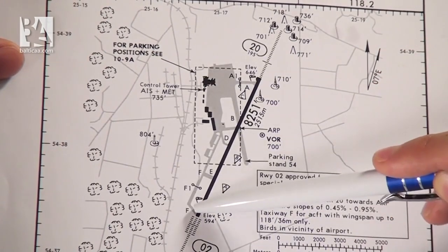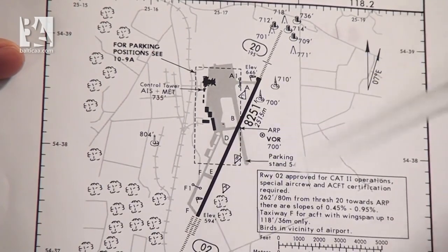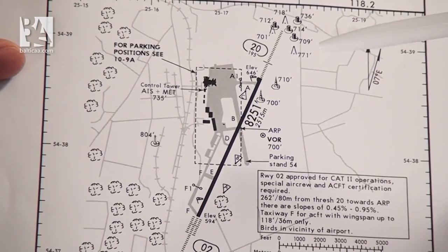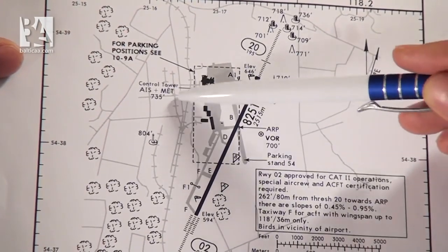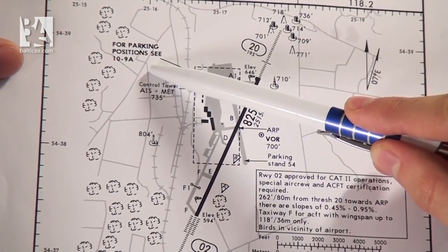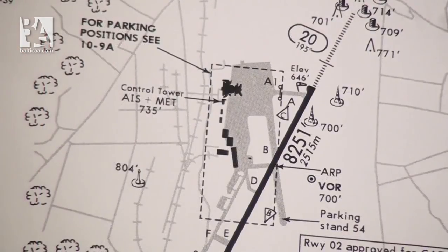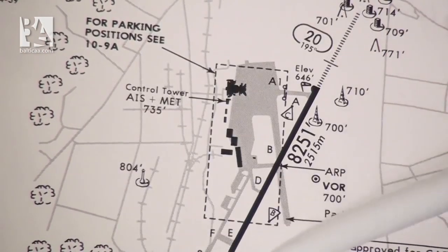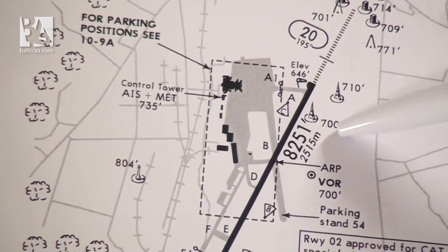For example, taxiways Foxtrot, Foxtrot 1, Echo, Delta, Bravo and so on. We see a big rectangular shape which indicates parking positions C10 and 9A, which we will see a little bit later. Around the airfield we can see a lot of markings for woods and for obstacles, and for the obstacles of course we have their elevations marked.